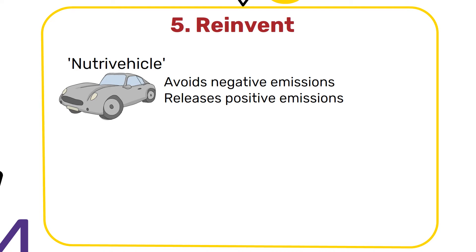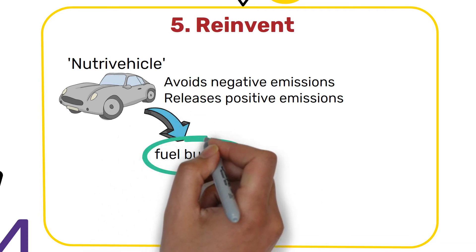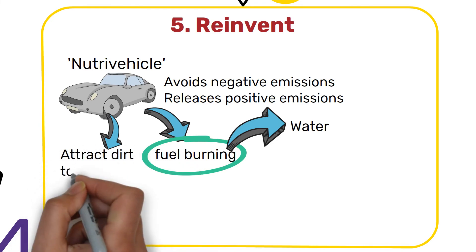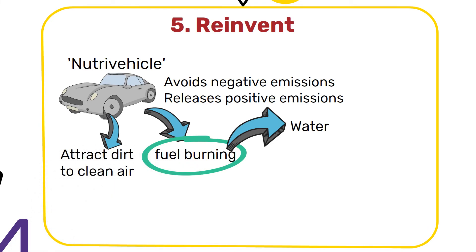Everything the car emits is nutritious for nature or industry. As it burns fuel, the water vapor in its emissions could be captured and turned back into water. Using fluid mechanics, tires could be designed to attract and capture harmful particles, hence cleaning the air instead of further polluting it. And of course, after the end of its useful life, all the car's materials go back to biological or technical cycles.